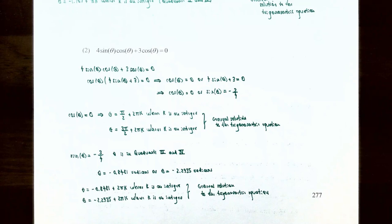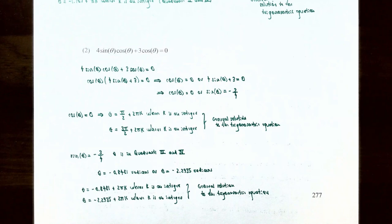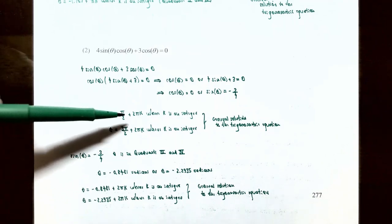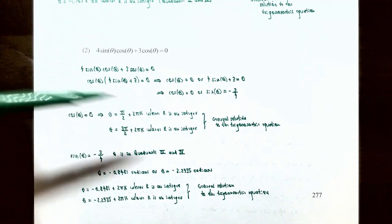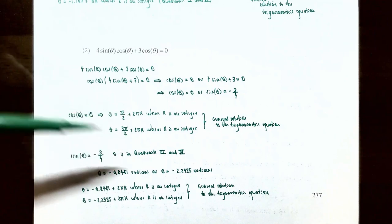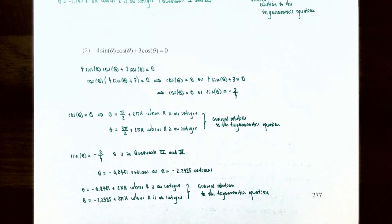We have two equations to solve: cosθ = 0, or solving the other equation for sinθ gives sinθ = −3/4. Solving cosθ = 0 first: cosine equals zero at θ = π/2 or θ = 3π/2. So the general solutions are θ = π/2 + 2πk or θ = 3π/2 + 2πk, where k is an integer. Any angle of this form will be a solution to cosθ = 0.